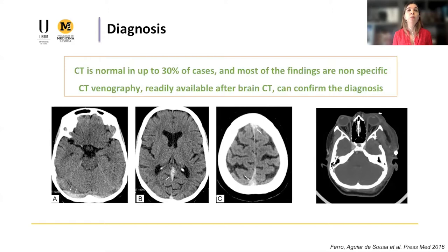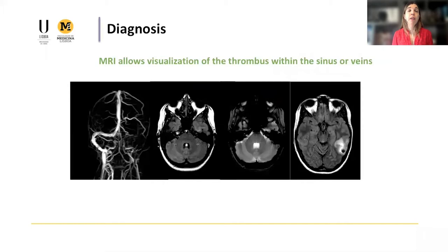For example, we can have a hyperdense sinus — as seen here in the right transverse sinus, the straight sinus, and the superior sagittal sinus — but we still need to confirm the filling defect using another method, such as CT venography. MRI is also very useful; you can see the thrombus inside the sinus on FLAIR and T2 star sequences, and use that signal to date the thrombus, whether acute or subacute. The MR venography with or without contrast can also show the filling defect and is more accurate in showing the brain lesion, especially the non-hemorrhagic component.